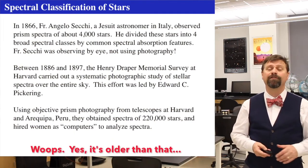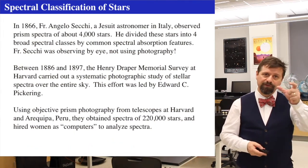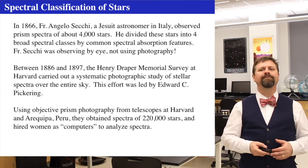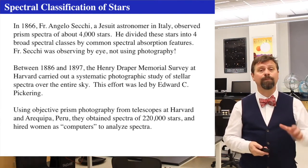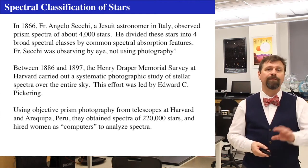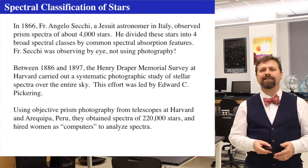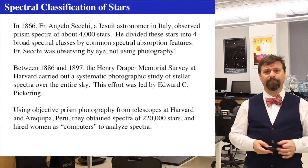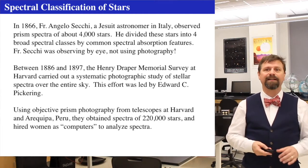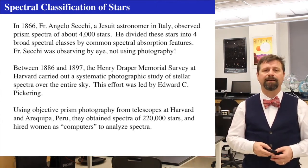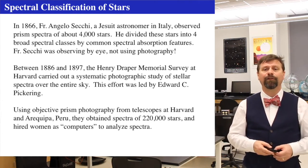Spectral classification started in the 1860s by a Jesuit astronomer in Italy, who observed about 4,000 stars with just a prism to his eye, dividing them into four rough groupings based on common spectral absorption features — dark lines he could see, all by eye with no photography. Between the 1880s and 1890s, the Henry Draper Memorial Survey at Harvard University carried out a systematic photographic study of all stellar spectra over the entire sky, led by Edward Pickering.